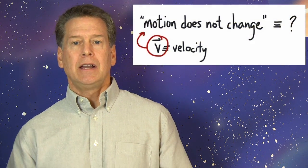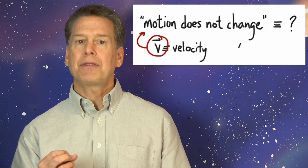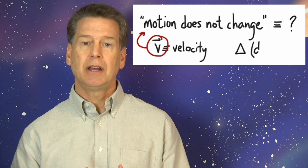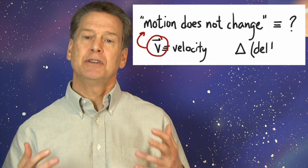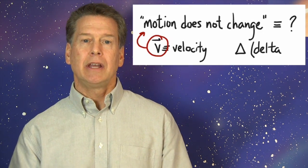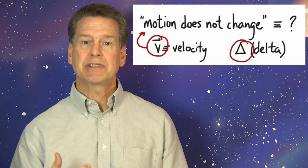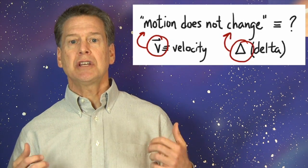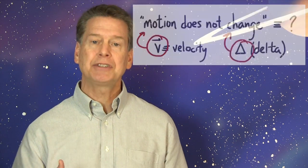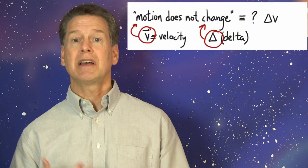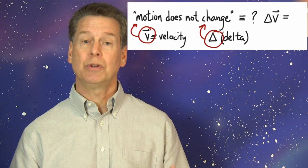But what about change? How do I symbolize that? If you know just a little bit of math, you have probably seen the Greek letter capital delta, that represents the notion of change. In particular, the delta, that triangle, means difference in. So, change in motion is symbolized by delta V vector. And no change in motion means delta V vector equals zero.